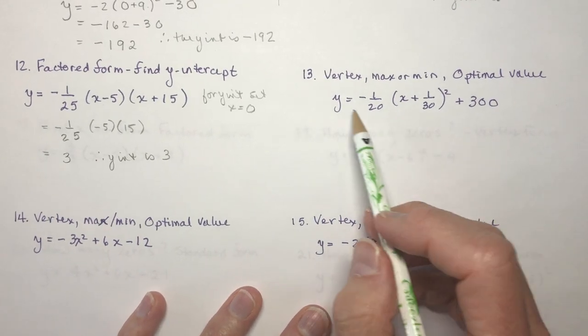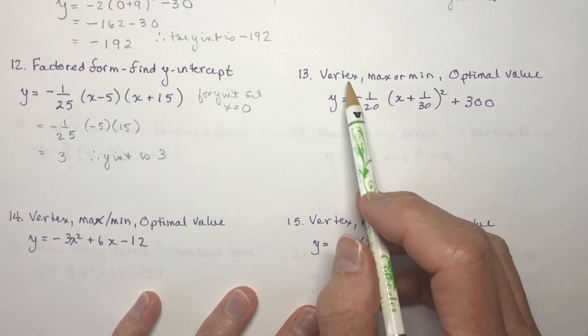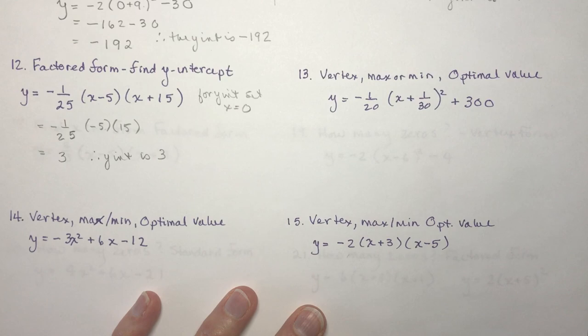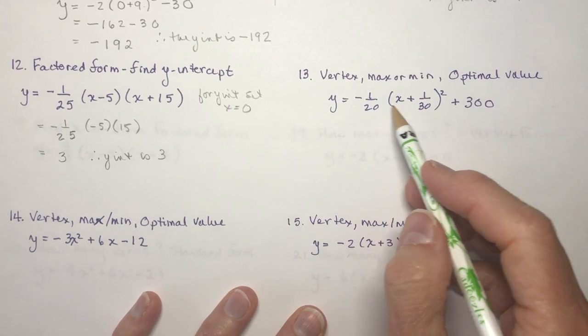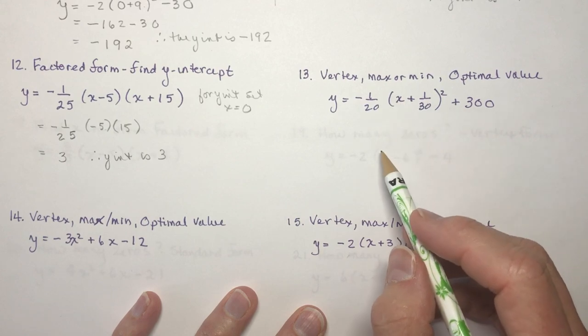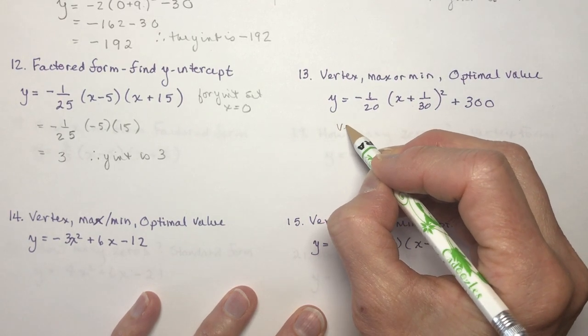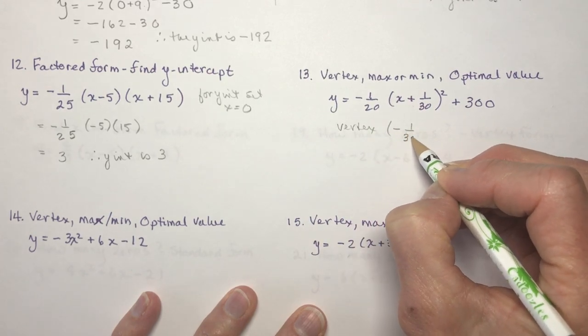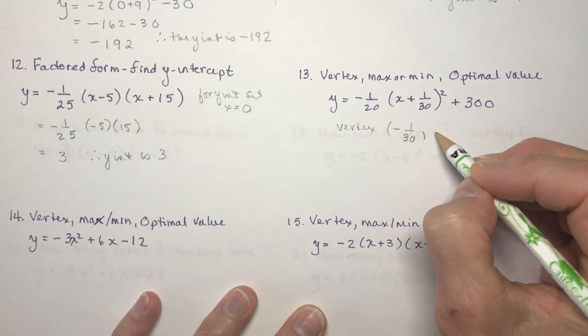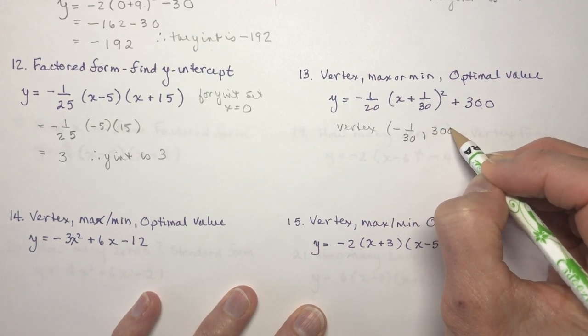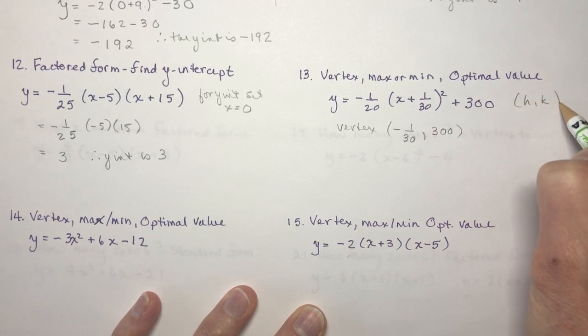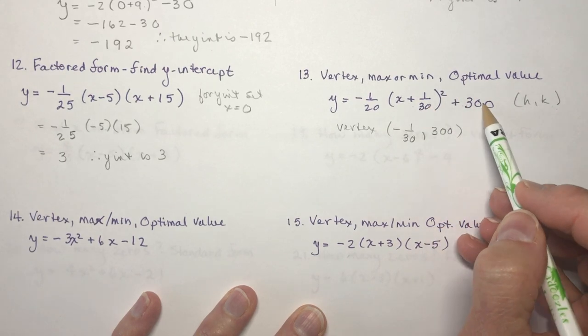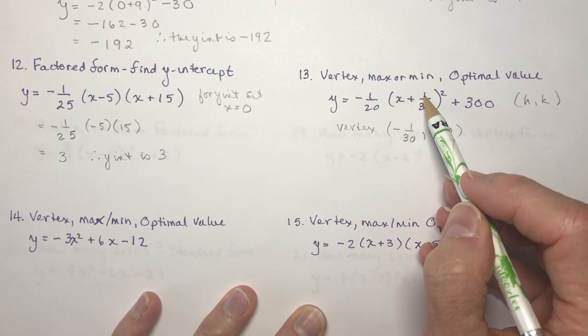Number 13. In these questions, the next three, we're going to be asked to find the vertex, is it a max or minimum, and give the optimal value. We're in vertex form, that's the best one to find the vertex. We just read it. Vertex is minus 1 over 30, 300. Remember, don't forget to change the sign. Here's my k value, so h k. h and k give you the vertex. This is x minus h squared plus k, so we have to take the negative of this number.